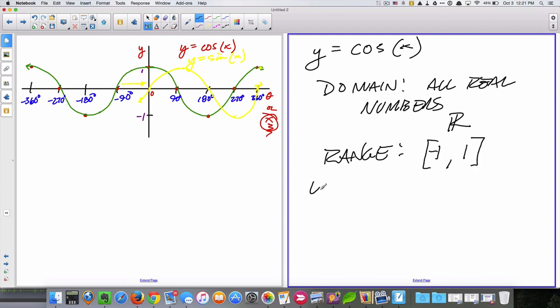For sine, if we examine, we end up getting just a domain of the same, all real numbers, and a range of, again, negative one to one. All right?